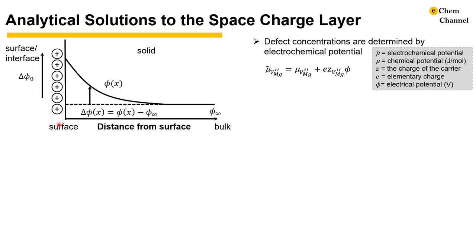Let's use vacancy on magnesium sites as an example to solve for the concentration distribution. The electrochemical potential of the vacancy is defined as the sum of chemical potential and the electrical component, with each term defined here. If you need a refresher on these potentials, please check out our video on potentials in electrochemistry.